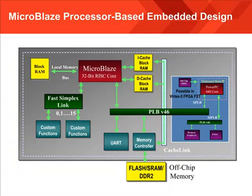Microblaze also supports a Fast Simplex Link, commonly called an FSL. The FSL is designed to offload computationally intensive functions to the FPGA fabric, such as a large multiplication or a large math function that might be completed more efficiently with the DSP SLICE resource.